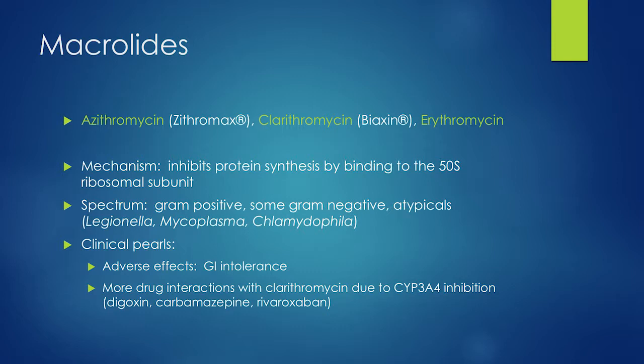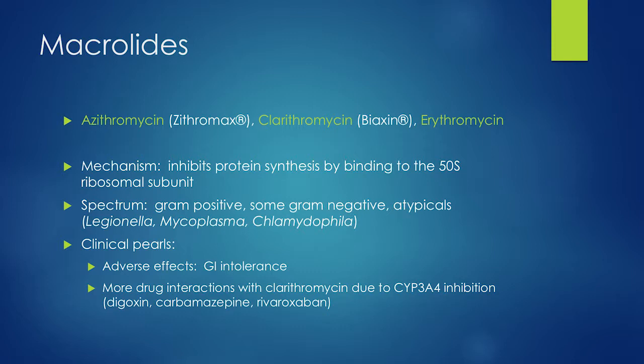Macrolide antibiotics — azithromycin and clarithromycin — bind and inhibit protein synthesis in the bacterial cell. They have broad coverage: some gram positive, some gram negative, plus atypical coverage such as Legionella and Mycoplasma. There's a lot of GI intolerance, especially with clarithromycin. Clarithromycin, or Biaxin, is also a strong inhibitor of the CYP 3A4 system, leading to many drug interactions.